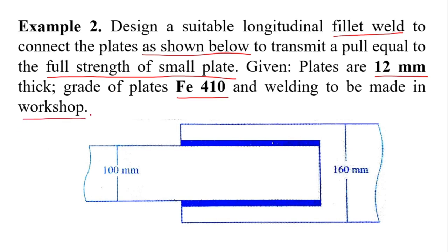Here as shown in the figure, two plates are to be connected by fillet weld. One plate is 100 mm wide and the other plate is 160 mm wide. And both plates have thickness 12 mm as given in the question. So let's start the solution part.